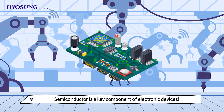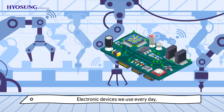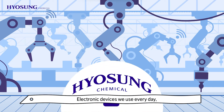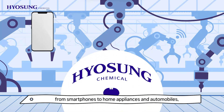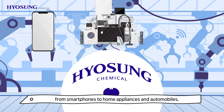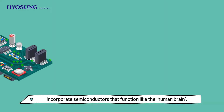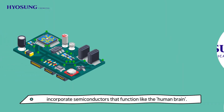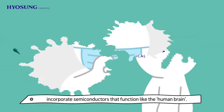Semiconductor is a key component of electronic devices. Electronic devices we use every day, from smartphones to home appliances and automobiles, incorporate semiconductors that function like the human brain.